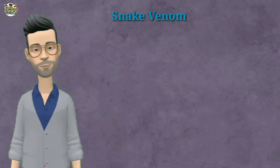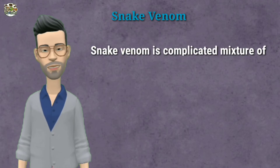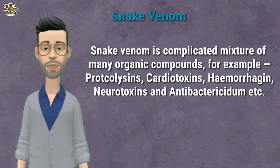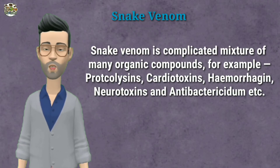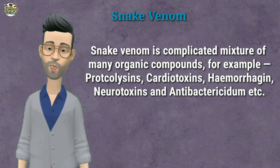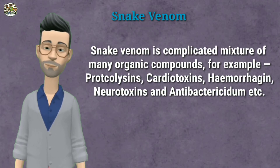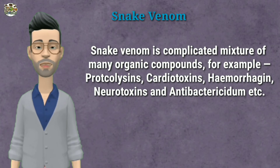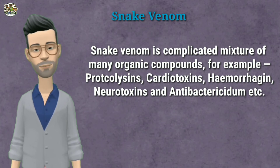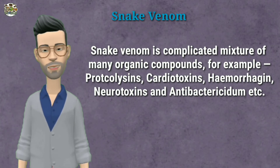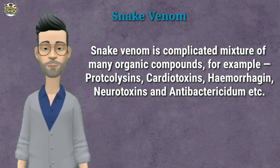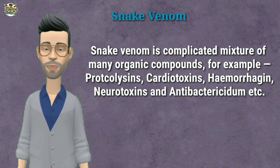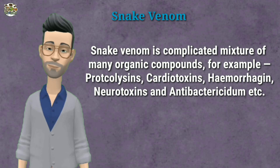Snake venom is a complicated mixture of many organic compounds, for example, proteolysins, cardiotoxins, hemorrhagins, neurotoxins, and antibacterial compounds, etc.